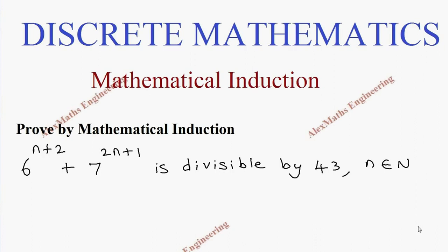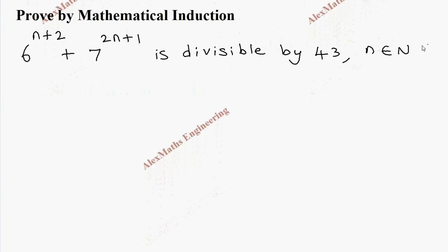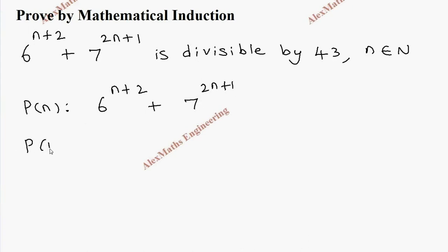Hi students, this is Alex. In this video we are going to prove a mathematical statement: 6^(n+2) + 7^(2n+1) is divisible by 43, where n belongs to the natural numbers. Let's take this as P(n): 6^(n+2) + 7^(2n+1).